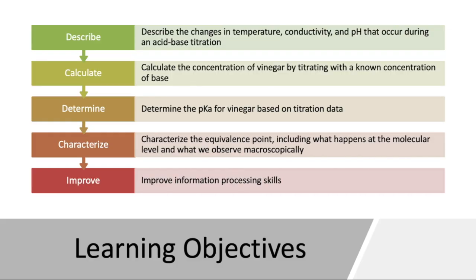Today we have several learning objectives. The first is to describe the changes in temperature, conductivity, and pH that occur during the acid-base titration — those are the primary data sources you're going to be using for the experiment. The second is calculating the concentration of vinegar by titrating with a known concentration of base, which is actually the primary purpose of a titration: to find the concentration of the unknown solution. The secondary purpose, when talking about a weak acid, is to find the pKa for the weak acid.